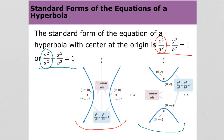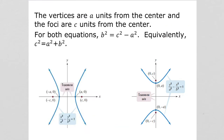If it goes along the y-axis, then the y² comes first. Unlike with the ellipse, a² does not have to be bigger than b². To find the foci, you use the formula c² equals a² plus b².